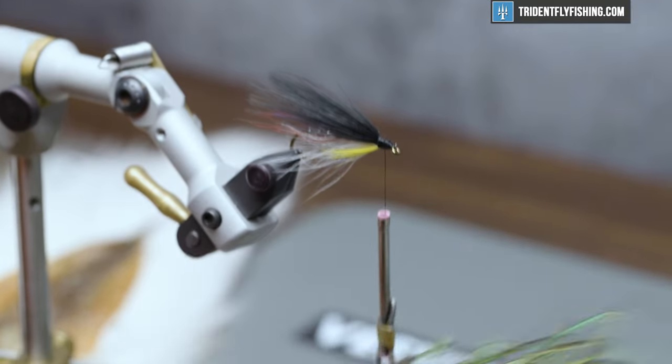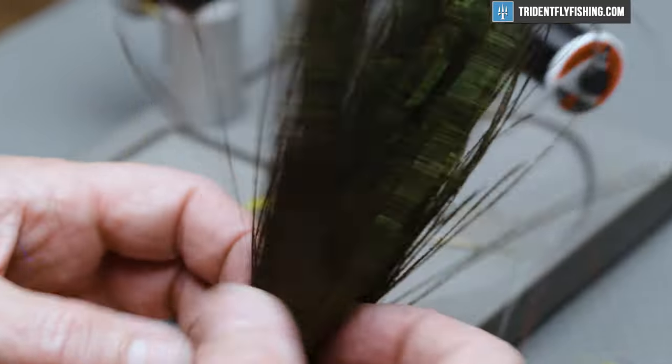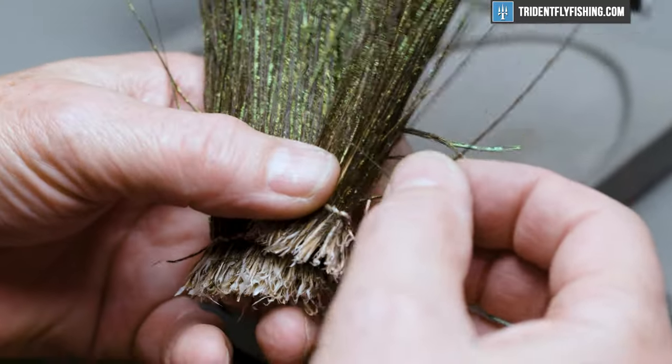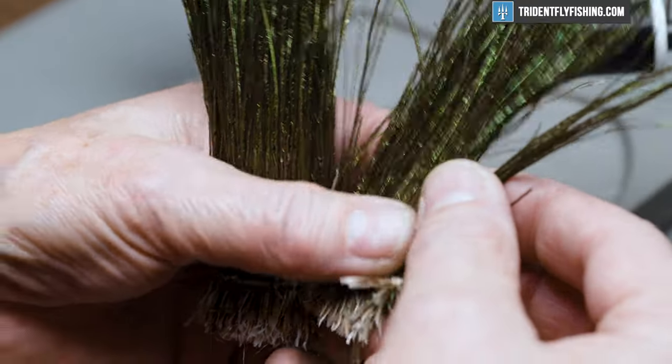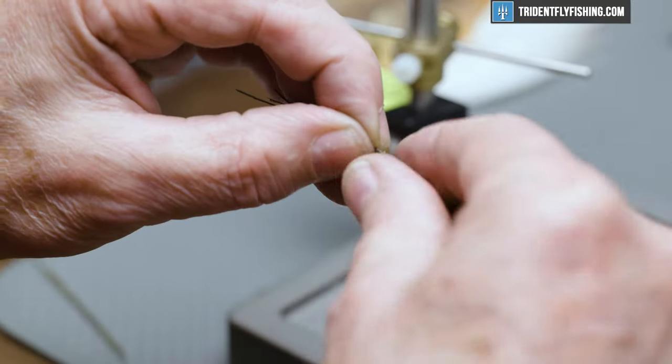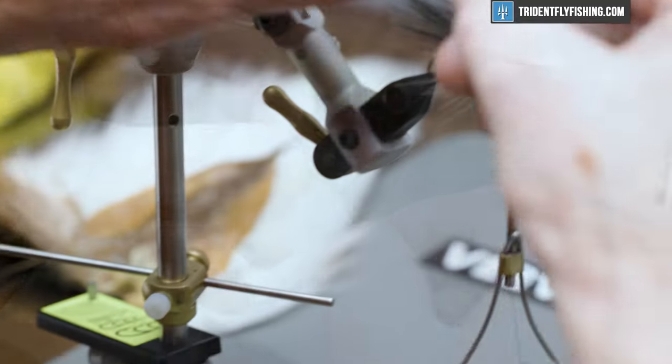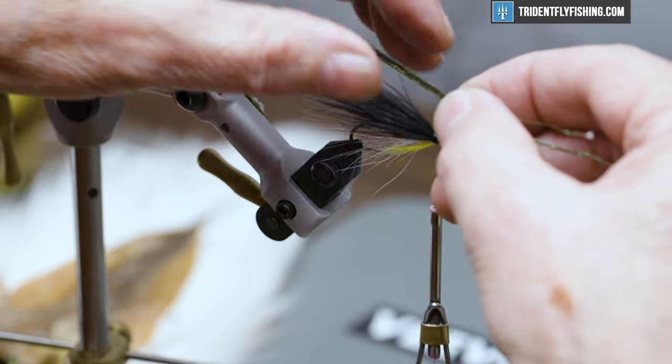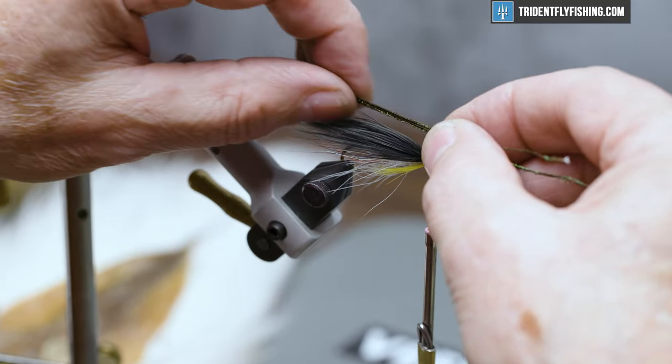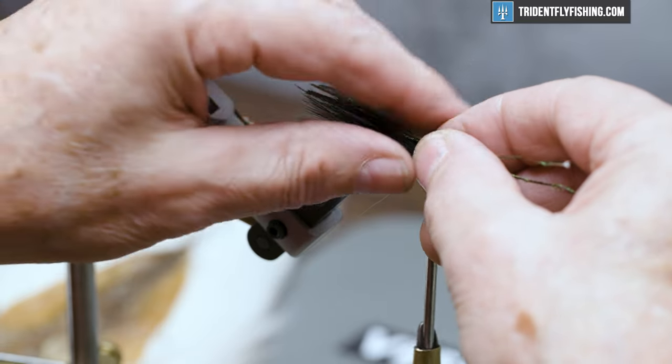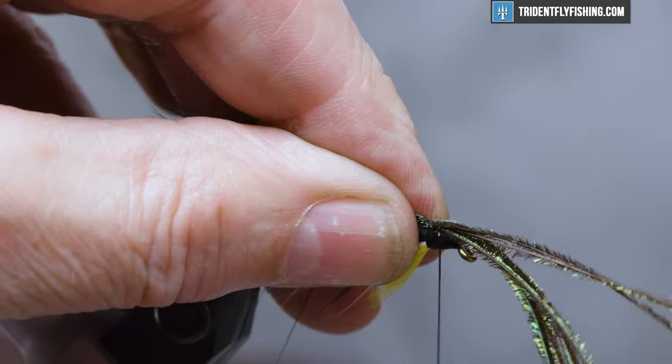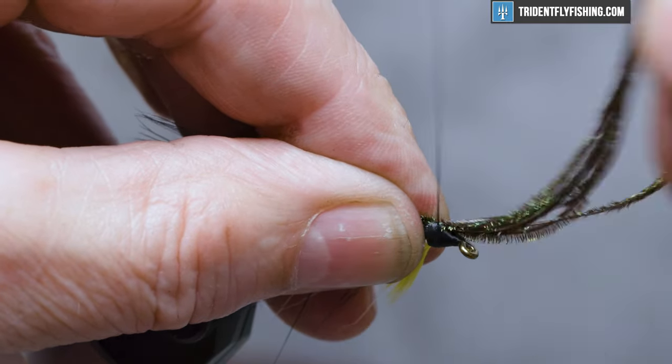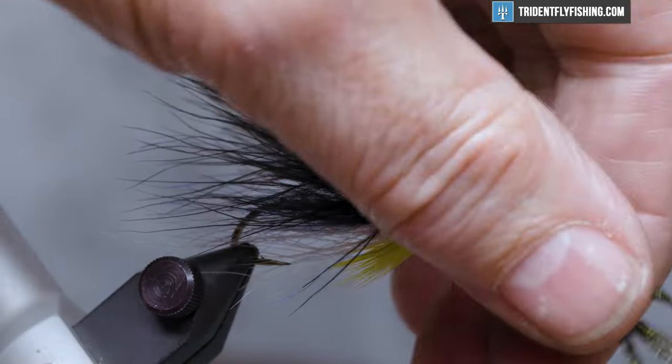And the topping for the fly is going to be some peacock hurl. So we'll find five or six strands of strung peacock hurl here and we'll tie those in. Even up the tips as best we can here. And these are going to extend over the top of the black marabou as far back as the marabou. Tie those in right on top. Cut our excess.